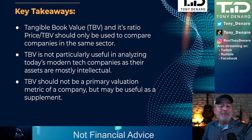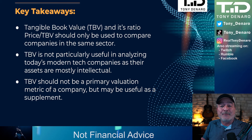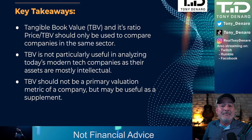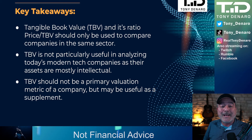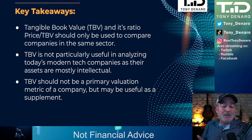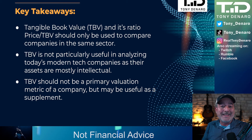The final key takeaway is that book value and tangible book value should normally not be your primary metric for evaluating a company. Normally we're using things like price to earnings, return on equity, return on assets — how is the company using its capital to deliver value to shareholders? The exception might be if the market cap is lower than the book value or tangible book value, then you might have a value play that needs more analysis.